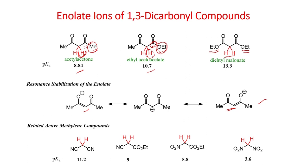When you replace this methyl group with another ethoxy group, the pKa value of this proton is further increased. The acidity of this proton is further decreased, because both sides now have the less electrophilic carbonyl group, comparing to the acetyl acetone carbonyl group.